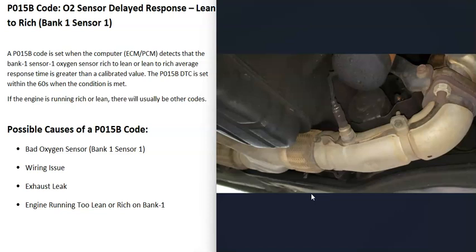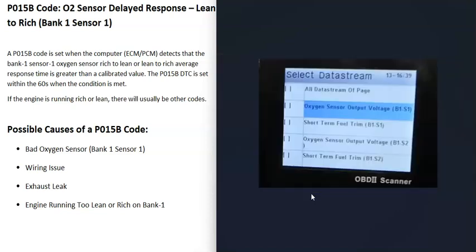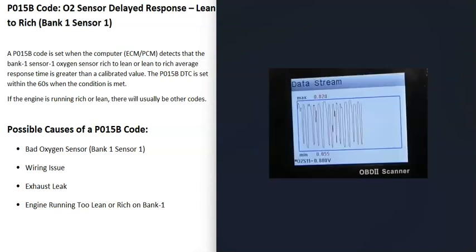If you have a good OBD2 scan tool, go into data stream or live data, select the bank one sensor one O2 sensor, and look for a waveform that oscillates negative then positive repeatedly. If it's flat, or the voltage is stuck high indicating a rich condition, or stuck low indicating a lean condition, there's an issue with that sensor.